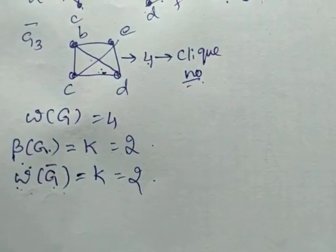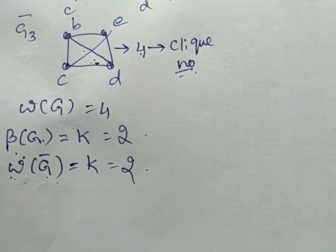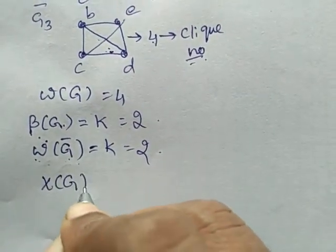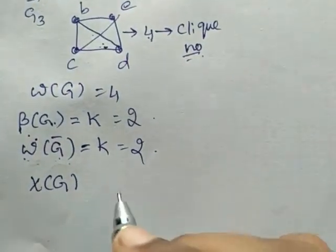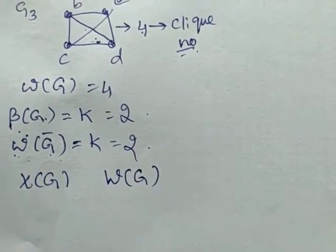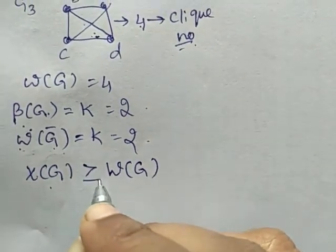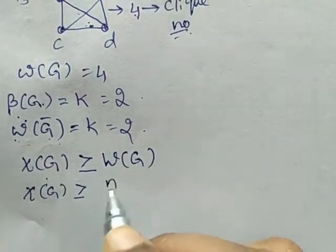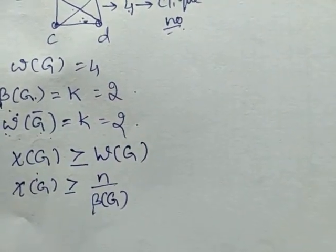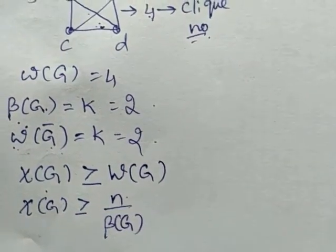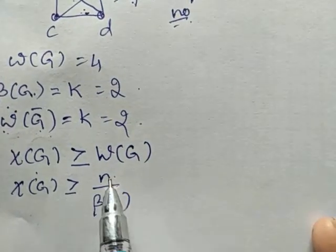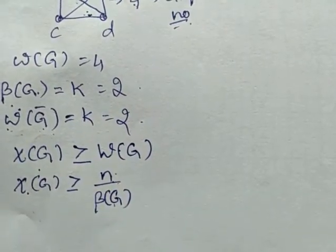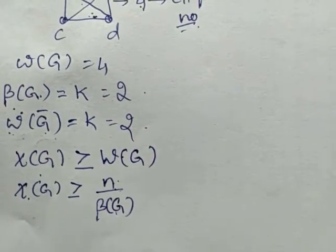Now we are going to find a relation between chromatic number and clique number of a graph. The chromatic number is denoted χ(G) and the clique number is ω(G). We are going to prove: first, χ(G) ≥ ω(G), and second, χ(G) ≥ n/β(G), where β(G) is the maximum independent set number and n is the total number of vertices in graph G.